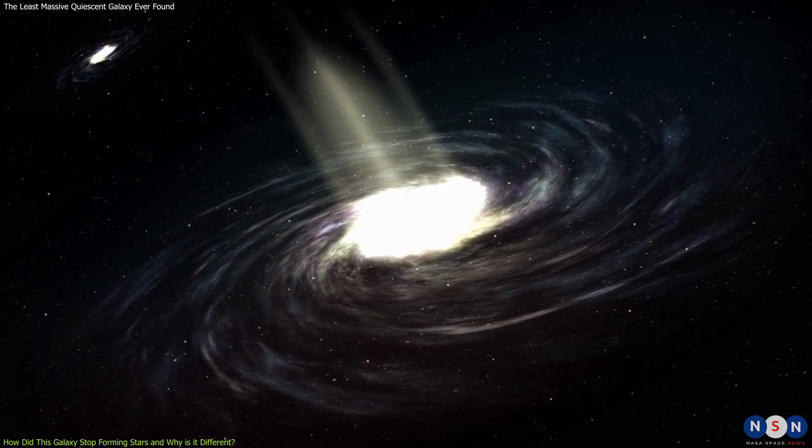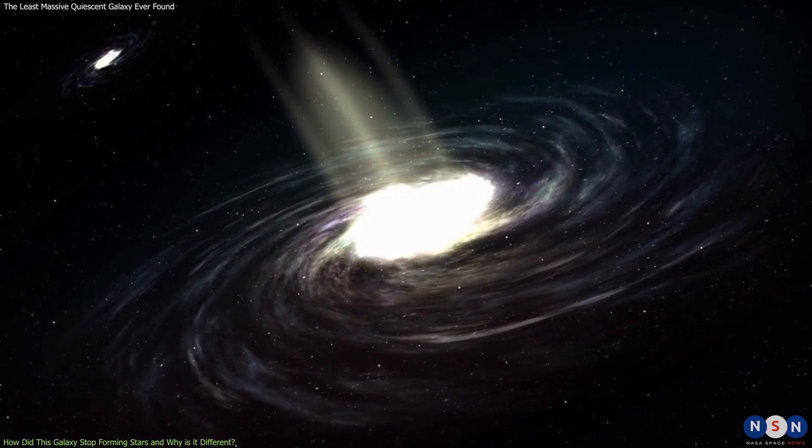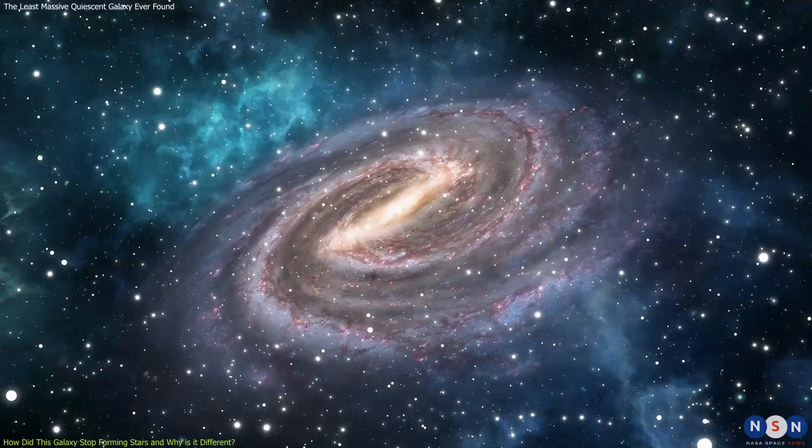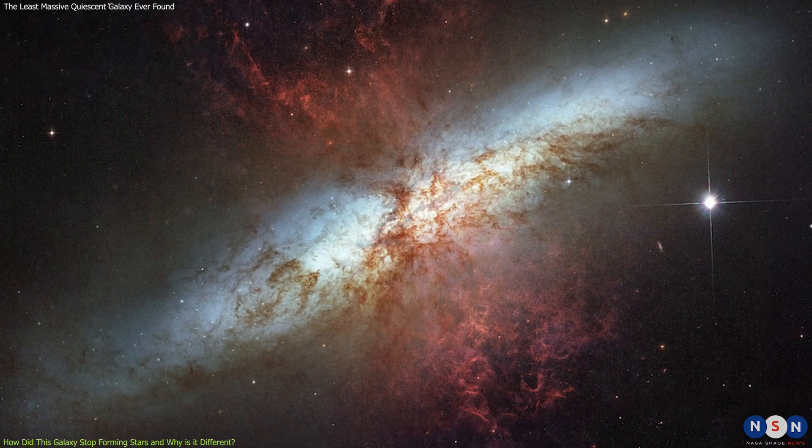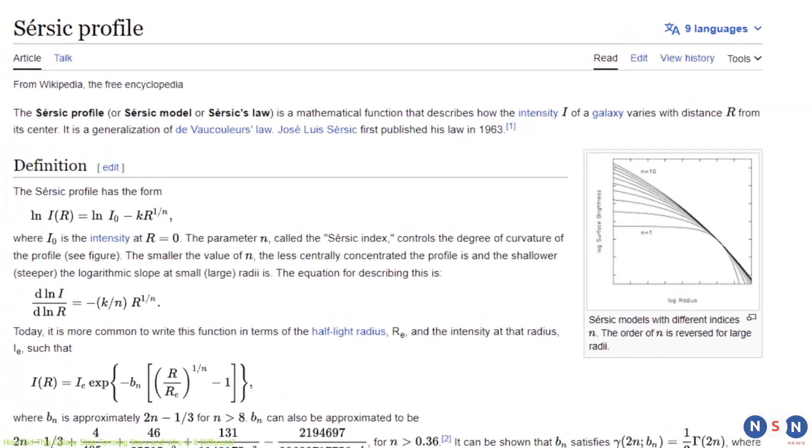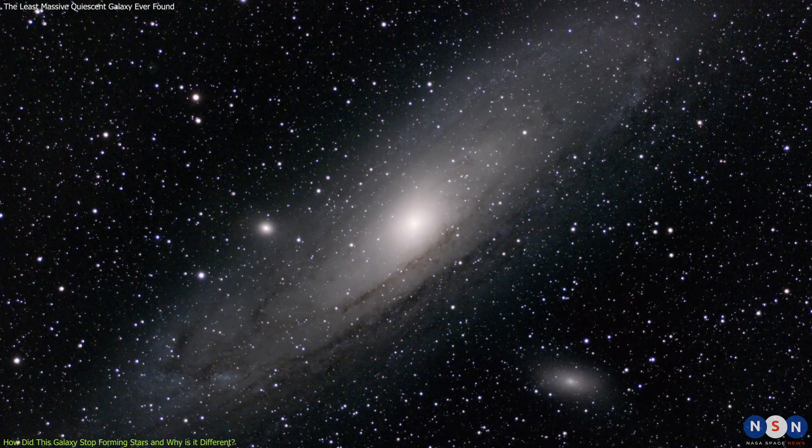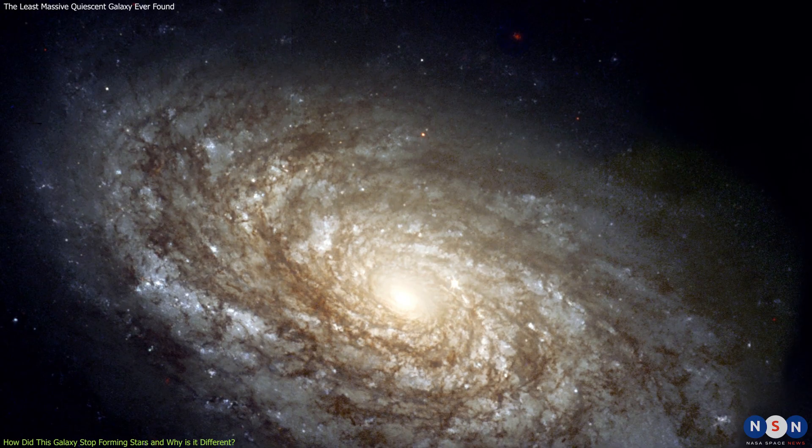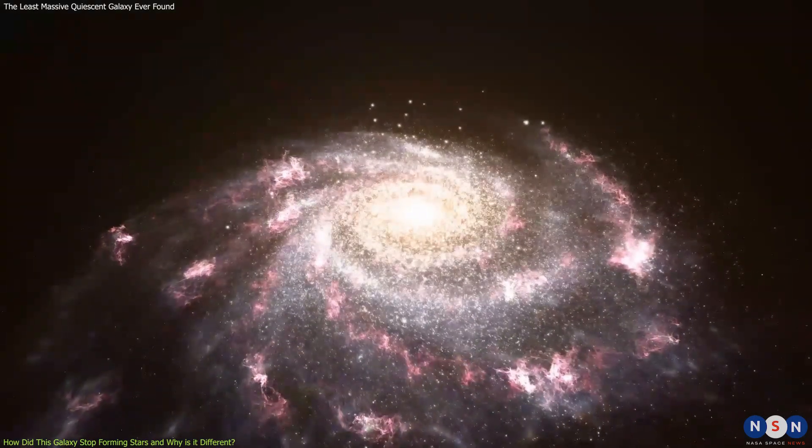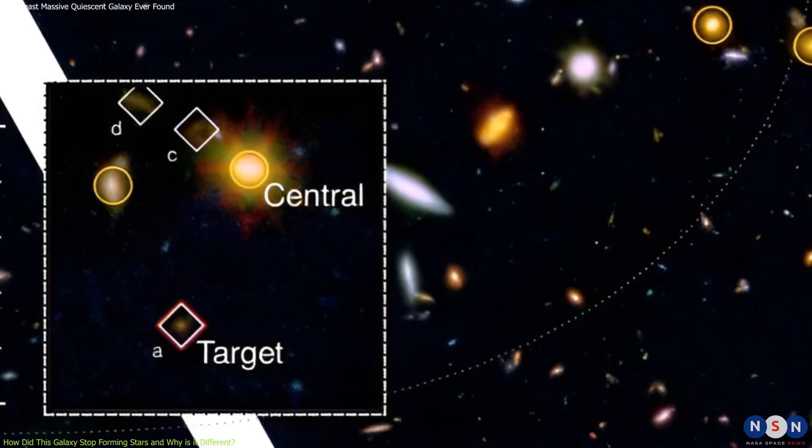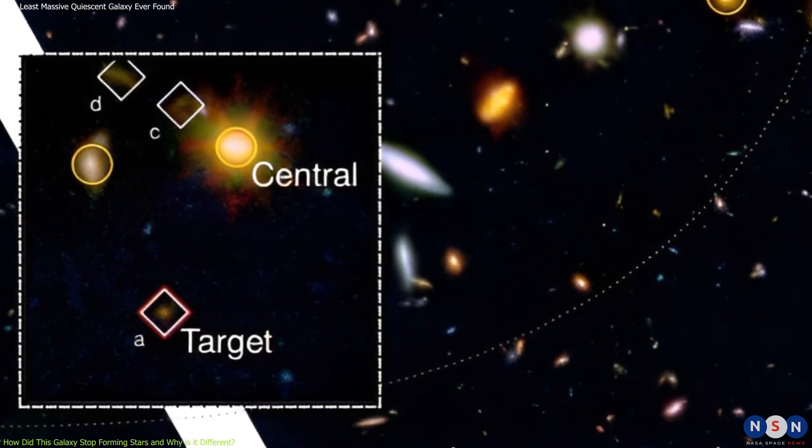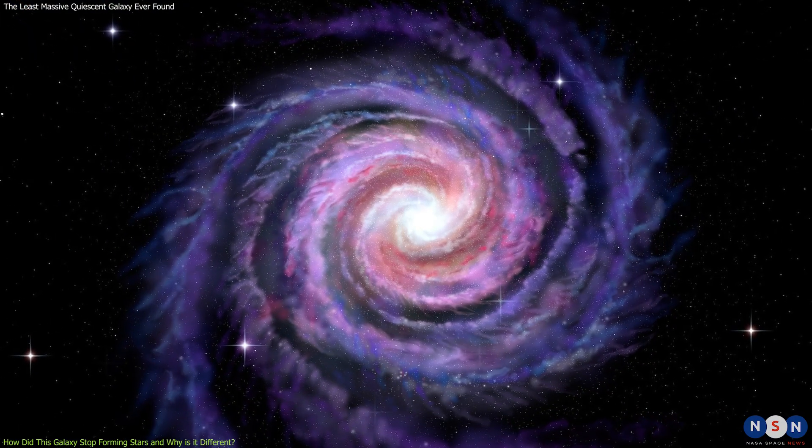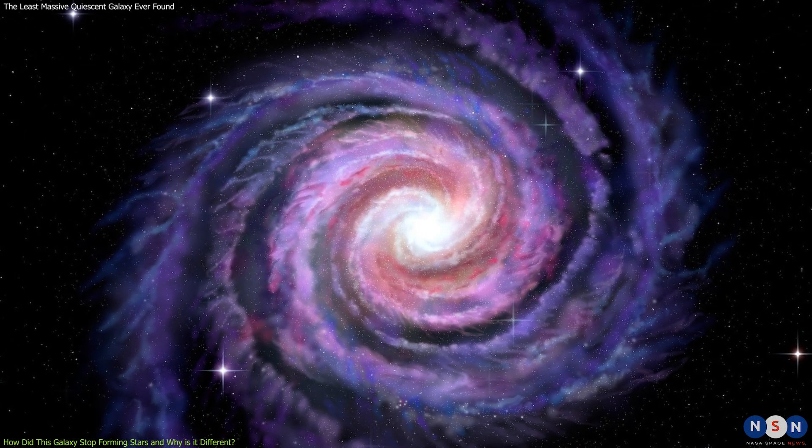One of the most striking features of this galaxy is that it has a very different structure than more massive quiescent galaxies at similar or lower redshifts. The galaxy has a very low surface brightness profile, meaning it is very faint and diffuse. It also has a very low CERSIC index, which is a parameter that describes how concentrated the light distribution of a galaxy is. A low CERSIC index means that the galaxy has a more uniform and flat light profile, while a high CERSIC index means that the galaxy has a more peaked and steep light profile. Most quiescent galaxies have high CERSIC indices, indicating that they have dense cores of stars in their centers. However, this galaxy has a CERSIC index of only 0.6, which is much lower than the typical value of 4 or higher for quiescent galaxies. This suggests that this galaxy does not have a prominent bulge or nucleus, but instead has a more disc-like or irregular shape.